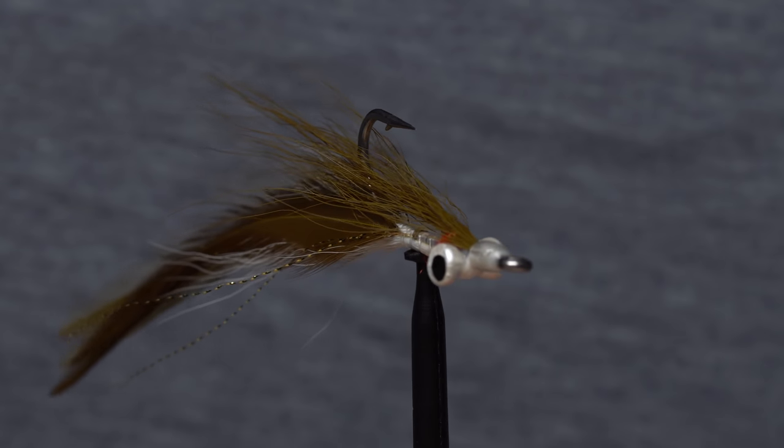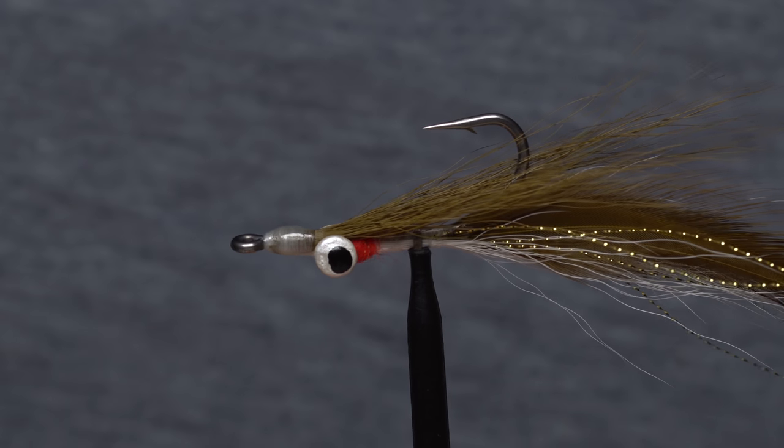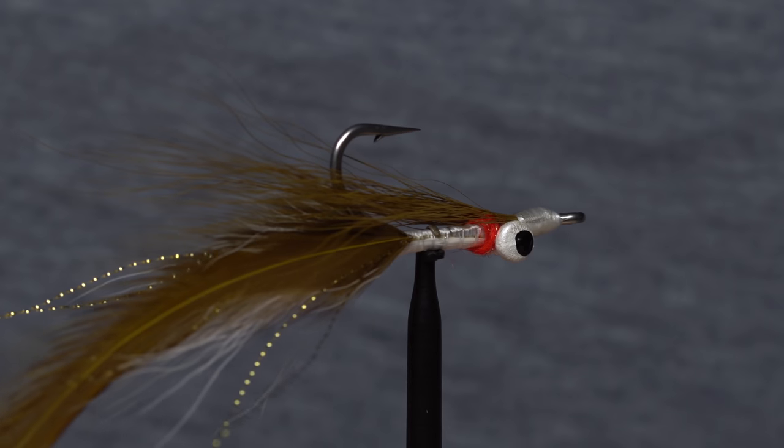The half-and-half combines elements of two of the most well-known fly patterns in existence: Lefty Cray's Deceiver and Bob Clouser's Clouser Minnow. It's a favorite of saltwater fly fishermen worldwide.